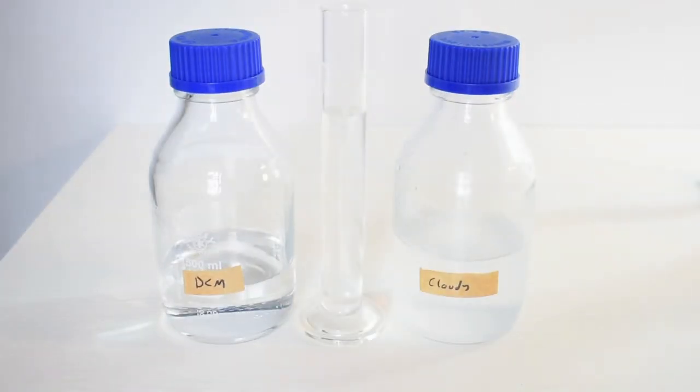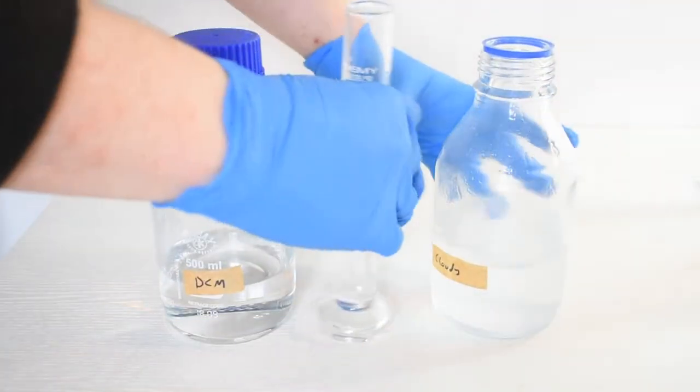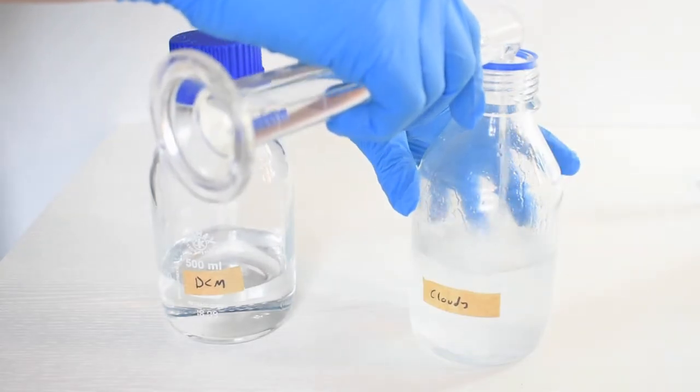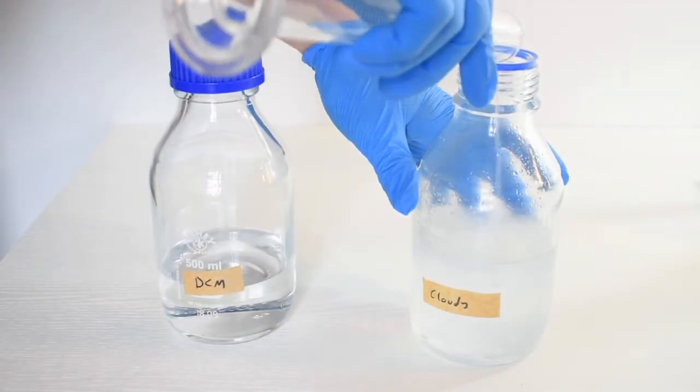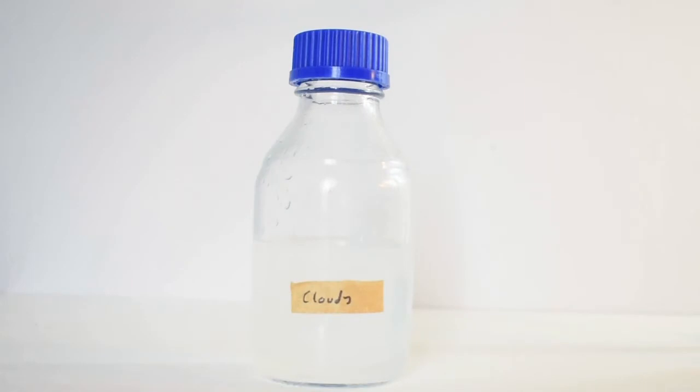The solvent which is going to be used to extract the mint oil and the menthol is called dichloromethane. So first, about 50 milliliters of dichloromethane is added to the bottle of cloudy distillate. Dichloromethane is significantly more dense than water, so it forms a layer on the bottom. To get everything to dissolve, I'm going to take the bottle and just shake it up.